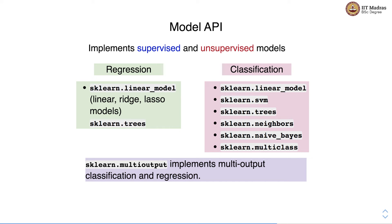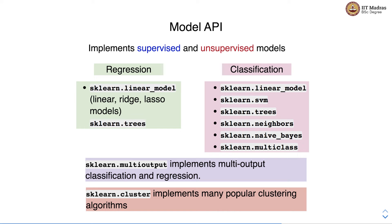sklearn.multioutput helps implement multi-output classification and regression — for example, multi-label classification or multi-output regression. sklearn.cluster implements many popular clustering algorithms for when you want to perform clustering. Generally, sklearn provides very nice documentation: if you type a module name in the sklearn documentation or help pages, you can find the different classes and machine learning models implemented in that module, helping you select the right model and module for your algorithm.